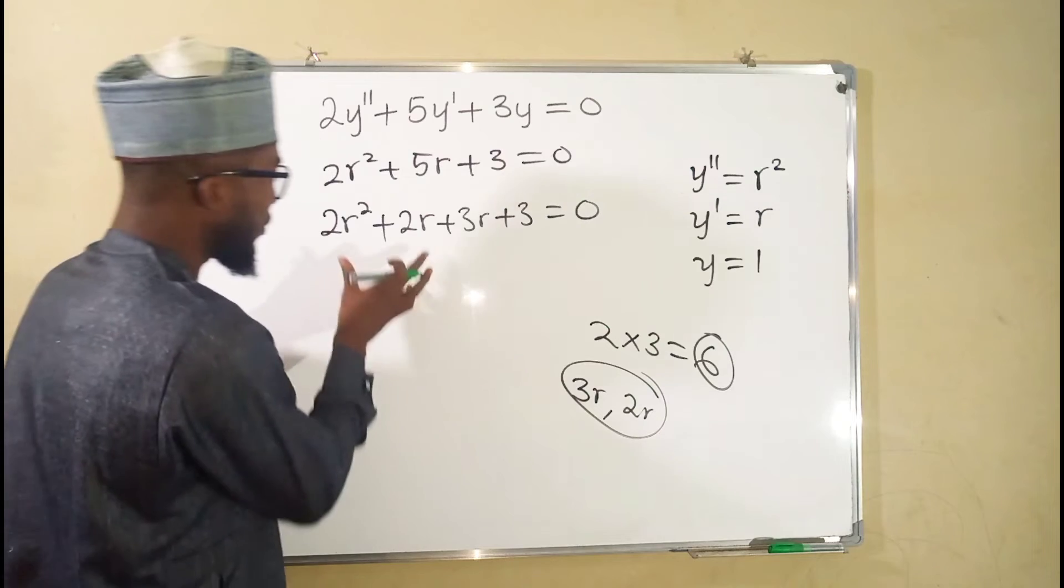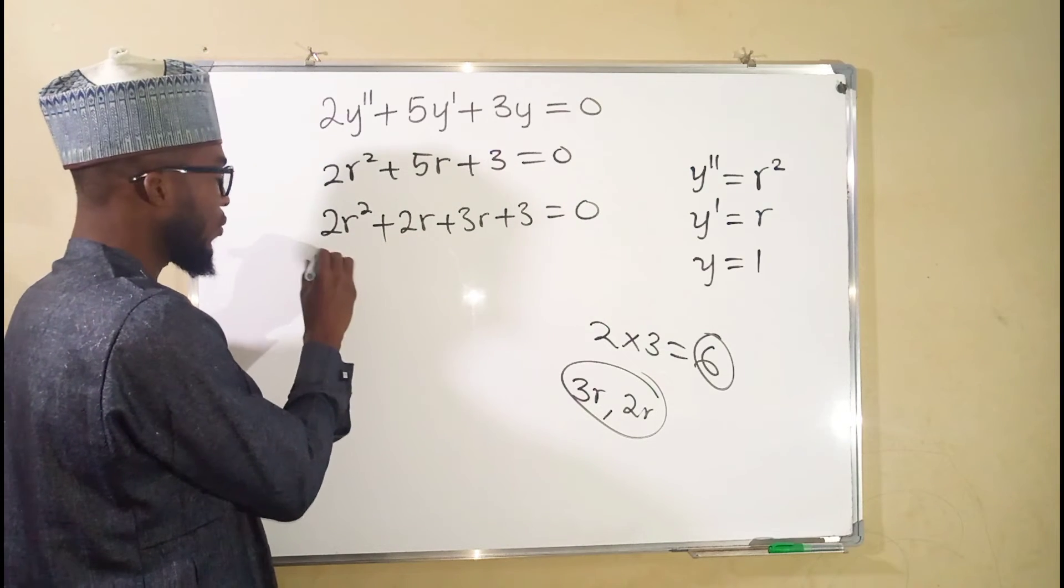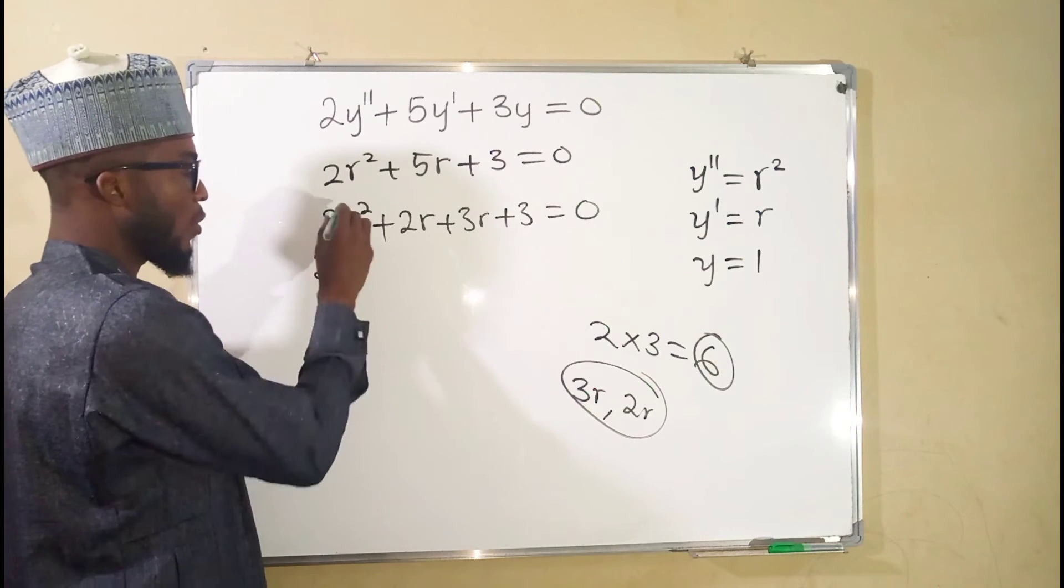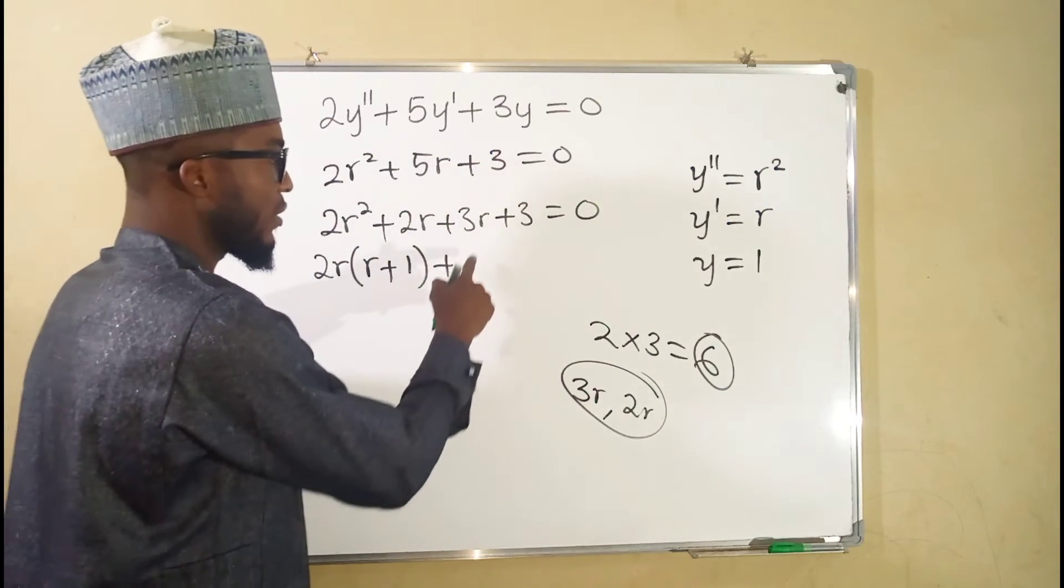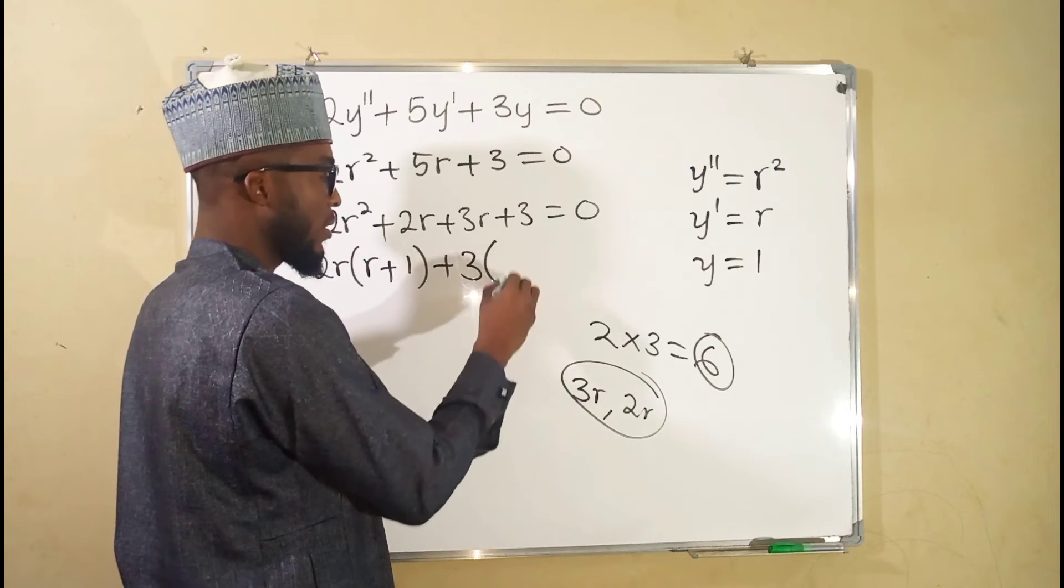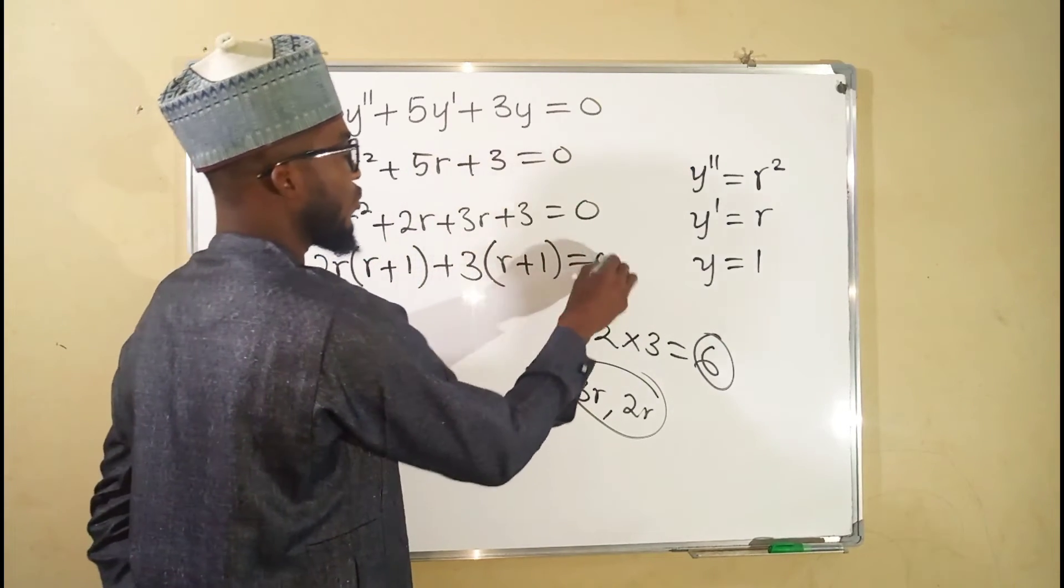We are going to factorize them. The first two, we have 2r in common between them. So we say 2r, inside we have only r here, and here we have 1 left. Then plus, we have 3 in between these two terms in common. So we have r inside plus 1, and all of this is equal to 0.